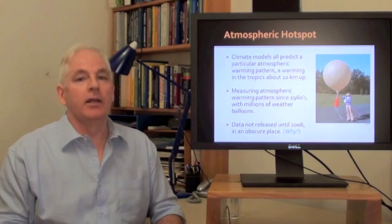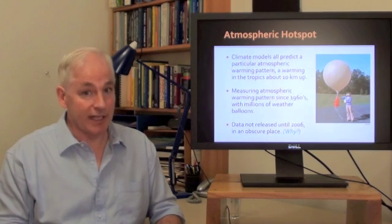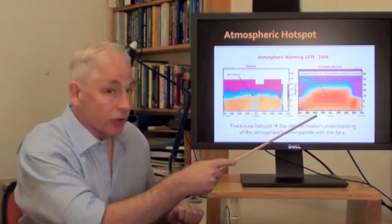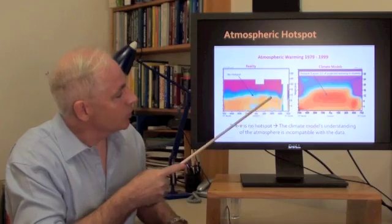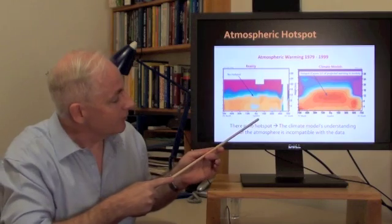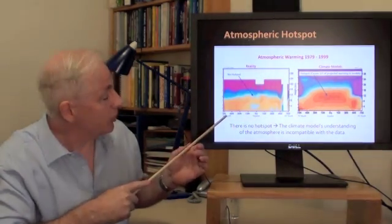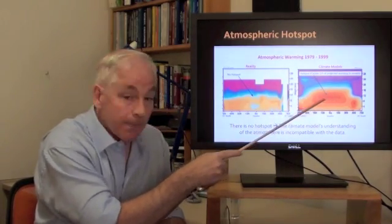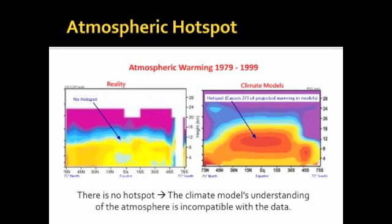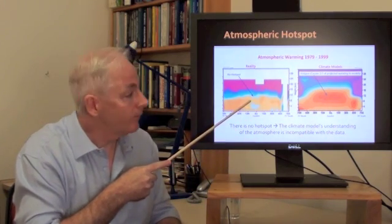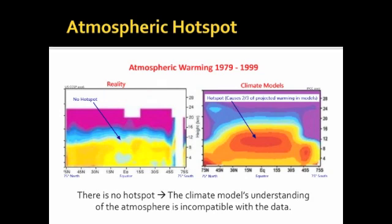Now, the government climate scientists didn't release that data until 2006, and only did it then, in a pretty obscure place. Here's why. Here are the diagrams showing, on the left, reality, and on the right, what's in the climate models. Each of these diagrams works on the vertical axis, this is in kilometres above sea level, zero to about 30 kilometres. And on the horizontal axis, in the middle we have the equator, on the left-hand side we have latitudes going north, up to 75 degrees north, 75 degrees south. Now, in the climate models, you have a big hot spot. See that red hot spot there? That's the hot spot. That's what all the climate models say is happening during a period of global warming. And the changes in clouds and humidity associated with that hot spot is what causes two-thirds of the warming in the climate models. Only one-third is directly due to CO2. But here's what happened in reality. There is no hot spot. None at all. So the climate models have it completely wrong.